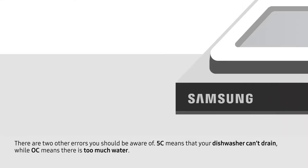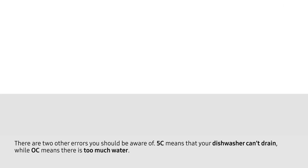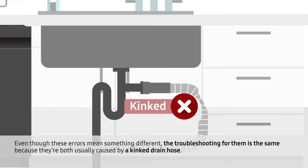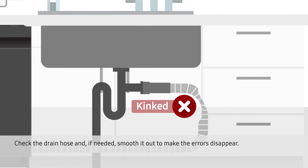There are two other errors you should be aware of. 5C means that your dishwasher can't drain, while OC means there is too much water. Even though these errors mean something different, the troubleshooting for them is the same because they're both usually caused by a kinked drain hose. Check the drain hose and if needed, smooth it out to make the errors disappear.